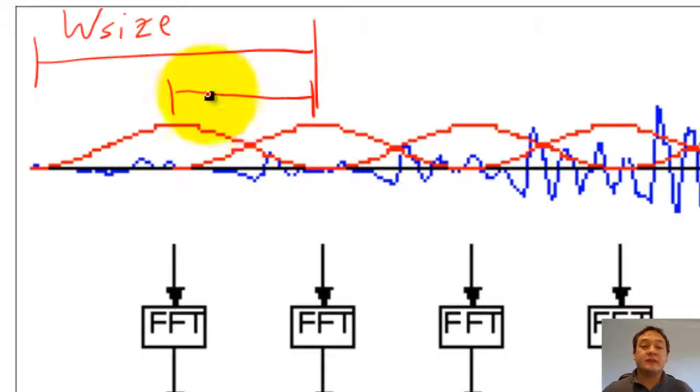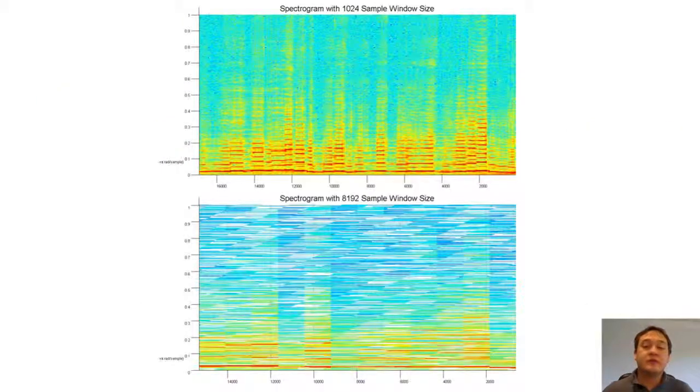If we increase our window size too much, we will not be able to accurately see how the frequency content changes over time. For example, notice how the 8192 sample window size looks blurry and looks the same over all time.